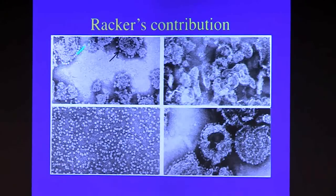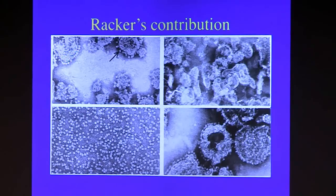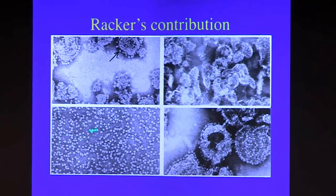Racker showed that this was actually the ATPase complex. He then did beautiful biochemical experiments where he dissociated the knob from the membranes. It was evident in these pictures that the knob was not attached directly to the membranes — it was distanced from it — and this was the idea of the stalk. He took the stripped membranes and added the knobs back, showing that the knobs were soluble in aqueous solution. They would hydrolyze ATP but not synthesize it, and he called this factor 1 ATP hydrolase: F1 ATPase.